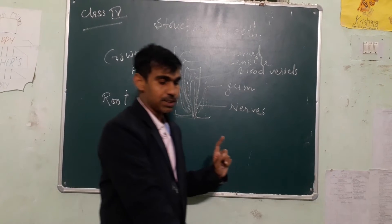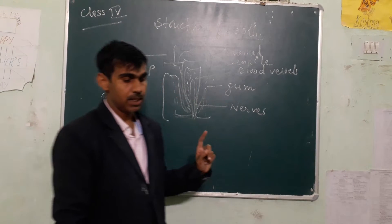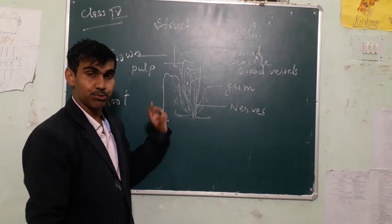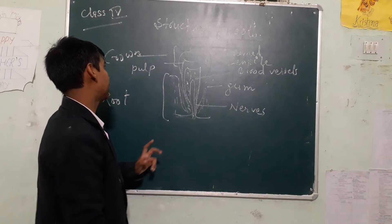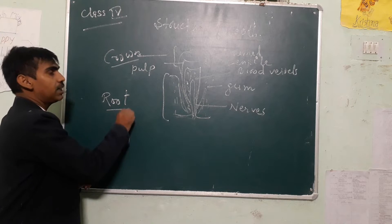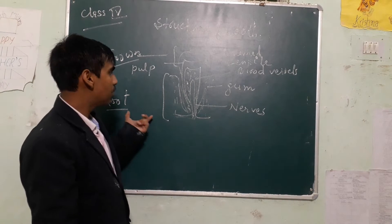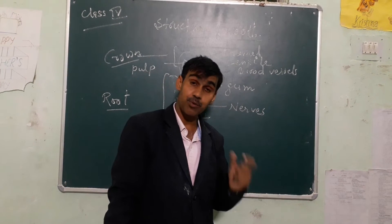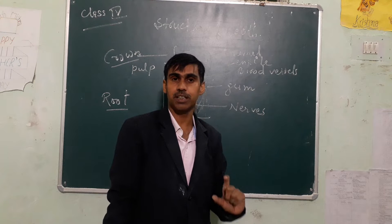As we know, tooth has two parts. The first part is the crown and the second part is the root. The crown and the root together form the tooth.